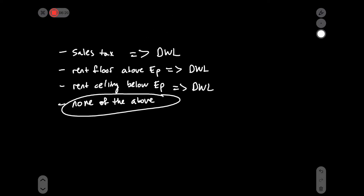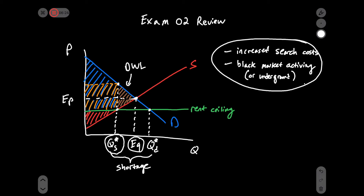Question three: a rent ceiling results in a shortage of apartments — as a result, there is blank. The first option, only a loss of consumer surplus for tenants, is not true because we also have a loss of producer surplus. A gain of both consumer and producer surplus is also not true. Only a loss of producer surplus for landlords is getting closer. The correct answer is: a loss of producer surplus and a potential net loss of consumer surplus.